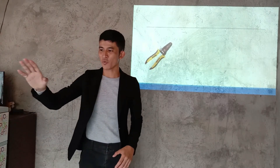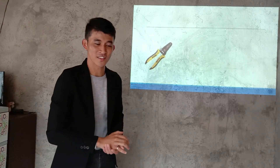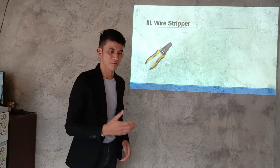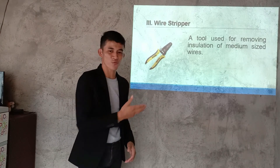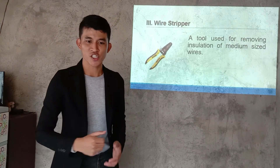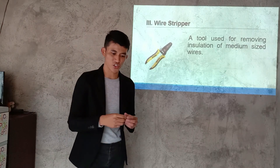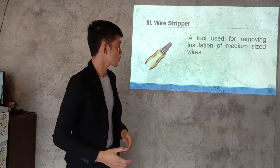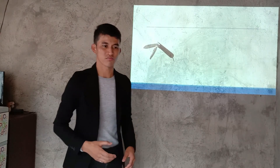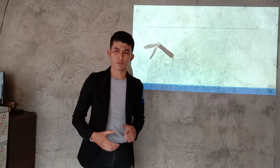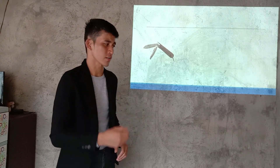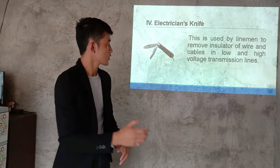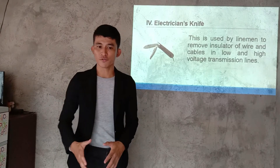What do you call that one? Anyone? Yes, John — correct, that is a wire stripper. What is a wire stripper? It is a tool used for removing insulation. Insulation is the cover of the conductor. Next — you're very familiar with this tool — correct, that is an electrician knife. It is used by a lineman to remove insulation from wires.